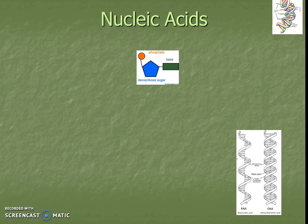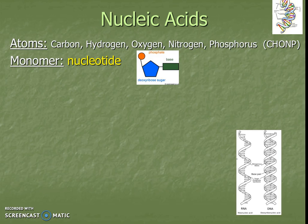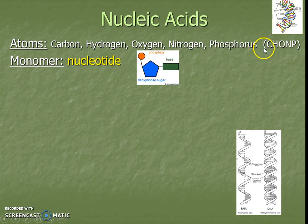Lastly, we have nucleic acids. They are made up of carbon, hydrogen, oxygen, and nitrogen — CHON — but now on top of that we also have phosphorus. That shouldn't be hard to remember because the monomer or building block of nucleic acids is a nucleotide, and one of the parts of a nucleotide is a phosphate group, which is based in phosphorus.